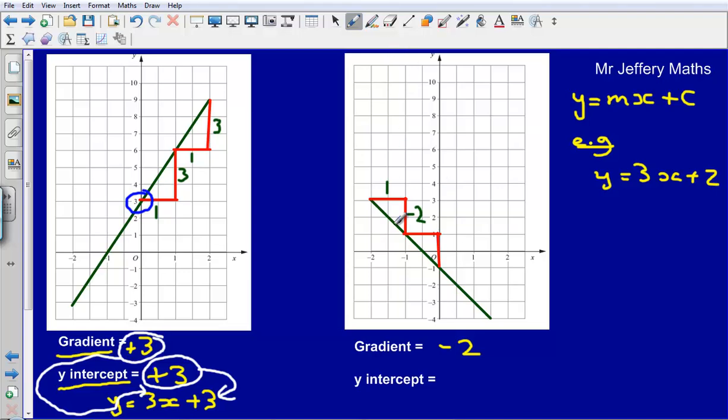Now my y-intercept, as we talked about a second ago, is just where is the graph cutting through the y-axis. So our y-axis is the one that goes up and down. It's cutting through at minus 1. So my y-intercept is minus 1. So the equation of this graph here would be y equals minus 2x minus 1.